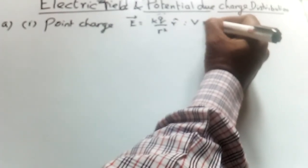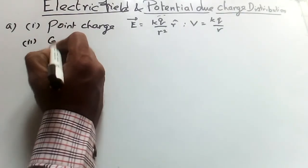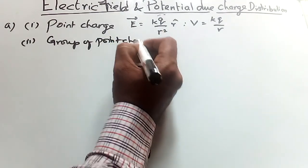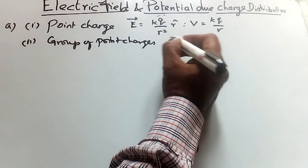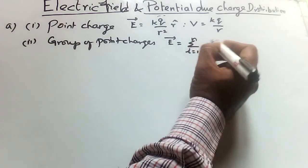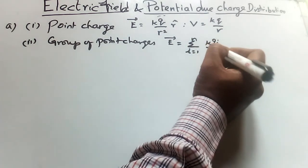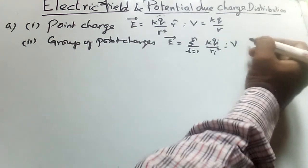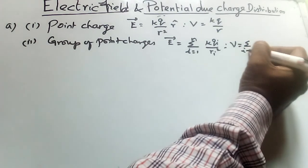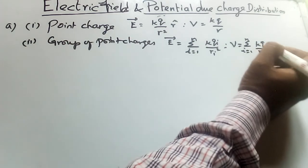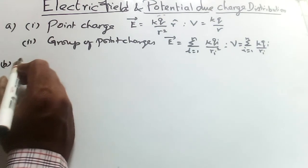For group of point charges, vector E equals summation i equals 1 to N of K Q i by R i square. For potential, V equals summation i equals 1 to N of K Q i by R i.